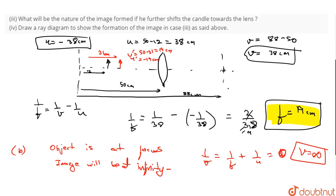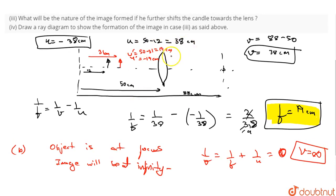The other part asks what will be the nature of the image if we further shift. This is focus. When we keep the object between focus and pole, then the image is virtual, and enlarged, and erect.